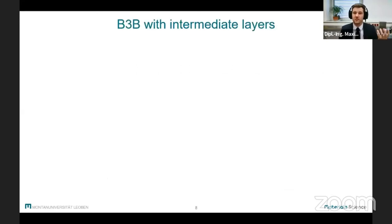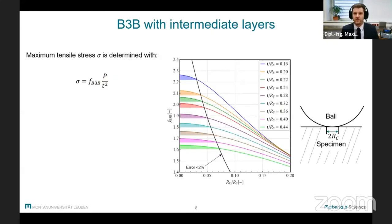So in order to explain the high strength of Ball-on-Three-Balls samples with layers, we have to look at how the maximum stress is calculated. We can see here that the factor f plays a very important role, as the only other variables are the load p and the specimen's thickness t. Now if we look at the factor f in dependence of the contact radius, we can see that if the contact radius increases, like it would be when testing with soft intermediate layers, then f decreases.